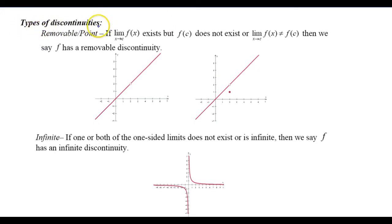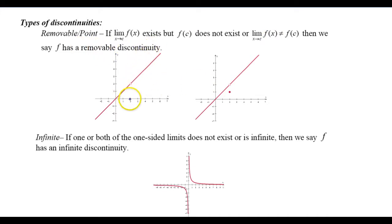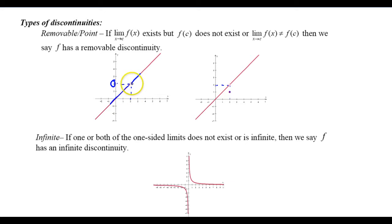Now let's look at the types of discontinuities. The first type is called a removable or point discontinuity. This happens when the limit as x approaches c of f of x exists, but f of c does not exist, or the limit doesn't equal the function value. Looking at these two examples, as I approach 2 from both sides the limit exists at y equals 2, but there is a hole — one point has been removed. That's why it's called a point or removable discontinuity.